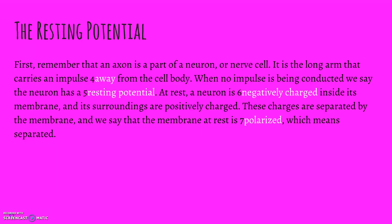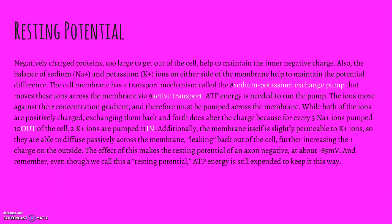An axon is part of a neuron or a nerve cell. It's that long arm that carries an impulse away from the cell body. When no impulse is being conducted, we say the neuron has a resting potential. At rest, the neuron is negatively charged inside the membrane, and the surroundings are positively charged. These charges are separated by the membrane itself, and we say that the membrane at rest is polarized—that just means that those charges are separated. Negatively charged proteins that are too large to get out of the cell help maintain that inner negative charge.